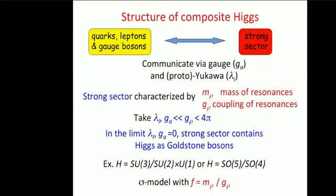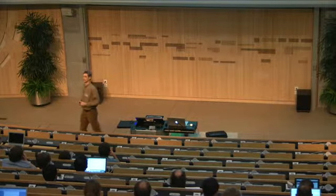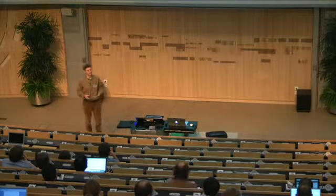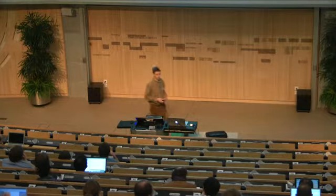Let me start with the idea of composite Higgs. The idea is really similar to what you have in QCD: you have strong dynamics which, from the low energy point of view, you cannot solve perturbatively, but you know there are some light particles — the pions — which are near Goldstone bosons, and you can describe their dynamics just using symmetry properties without really knowing how to solve the full theory.